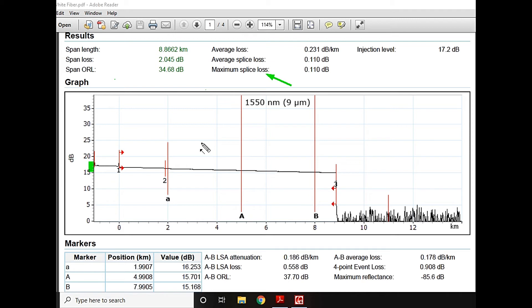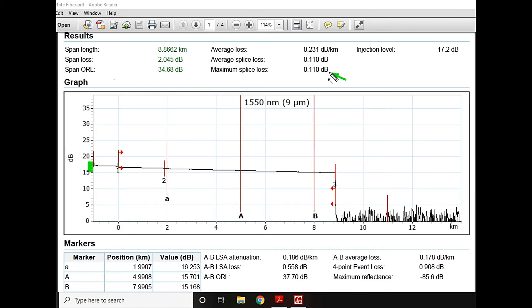If this portion is now 0.10 which is quite normal, but if that would have been 0.35 or 0.30, that loss is actually high. Then we were supposed to find this place - this is showing you the maximum splice loss in your link, the event which is having maximum splice loss.